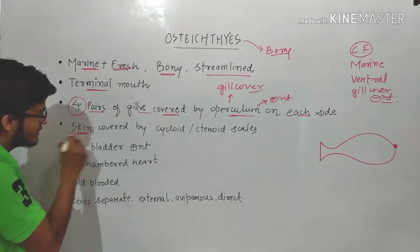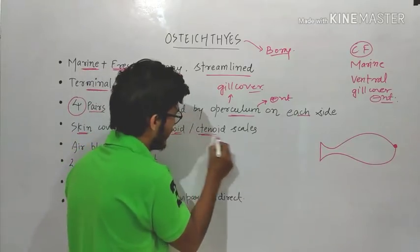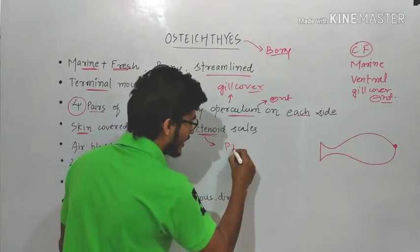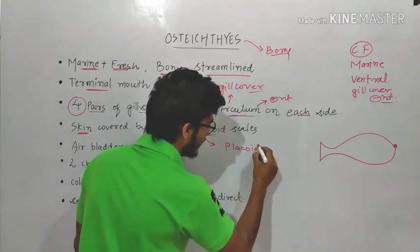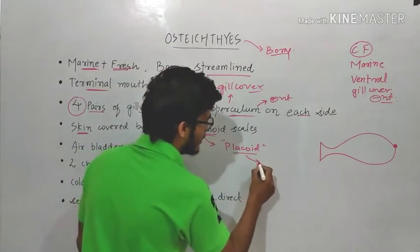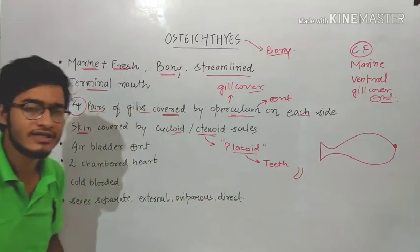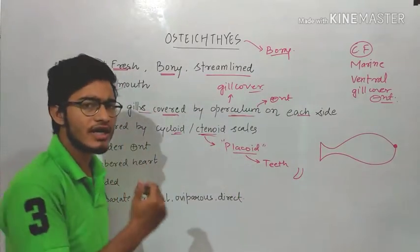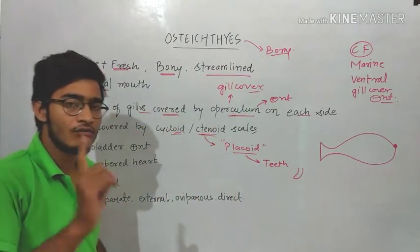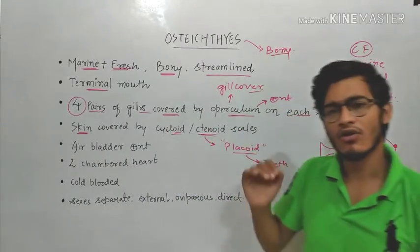After that, the skin is covered by cycloid or ctenoid scales in bony fishes. But in case of the cartilaginous fishes there are placoid scales, and those placoid scales are also modified to form the teeth, which are very strong and directed backward. But in case of bony fishes there are no placoid scales — there are either cycloid scales or ctenoid scales.